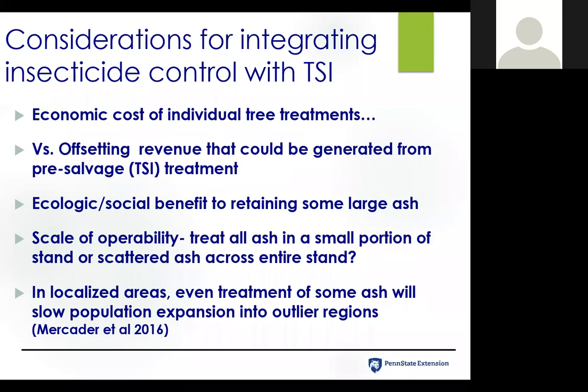I recently read a study that looked at very localized, small-scale insecticide treatments of even just a portion of the ash in an area. This study by Mercader et al. actually found that even treating some of the ash does slow the population expansion into outlier regions. That could be another consideration in long-term forest management — do we need to consider some of these insecticide treatments, particularly if we're near one of those outlier regions, to at least slow down the ash movement, which could then actually facilitate the ability to do some of this other pre-salvage harvest operations in another area.